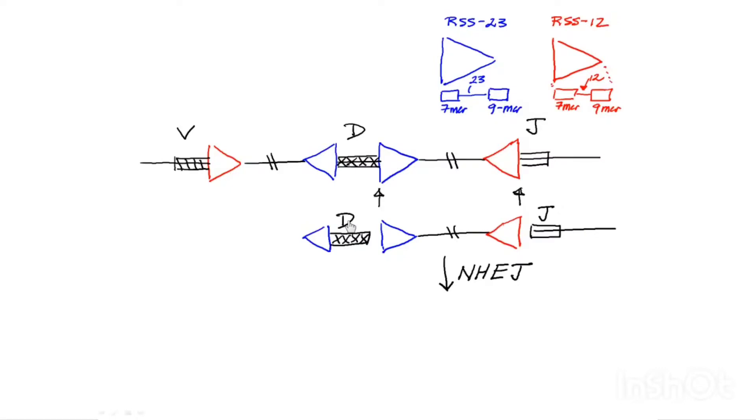So as a result of that joining event, you get the following. You get the D segment joined to the J segment. And then of course, the DNA extends out here, and the DNA extends out here. And the rest of the genome is upstream. So let's put that in there. Here's the upstream V region, ready for recombination.